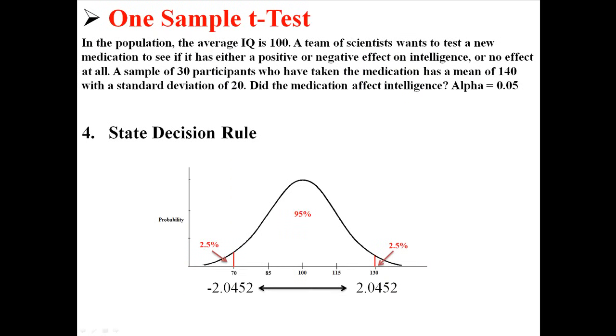We would expect most values we calculate to fall within negative 2.04 and positive 2.04. If it falls outside of that range, we're going to conclude that our sample is different from the expected population. So now our decision rule is if t is less than negative 2.04 or greater than positive 2.04, we're going to reject the null hypothesis.